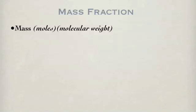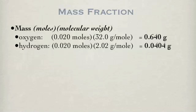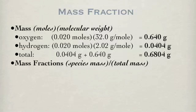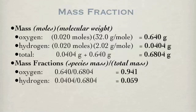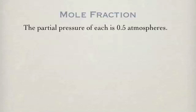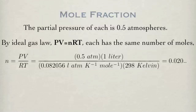To calculate mass fractions, first the masses of the individual species need to be calculated using moles times molecular weight. In this case, the species are oxygen and hydrogen. The total mass is the sum of the two species. The mass fractions are calculated by taking the mass of each species divided by the total weight, and this is done for hydrogen and oxygen. By definition, the total mass fraction is 1. Since 50% means that 50% of the pressure is due to each species, the partial pressure is 0.5 atmospheres. By the ideal gas law, each species has the same number of moles. Using the ideal gas law, we calculate the number of moles at the partial pressure of 0.5, which is the same for both species.